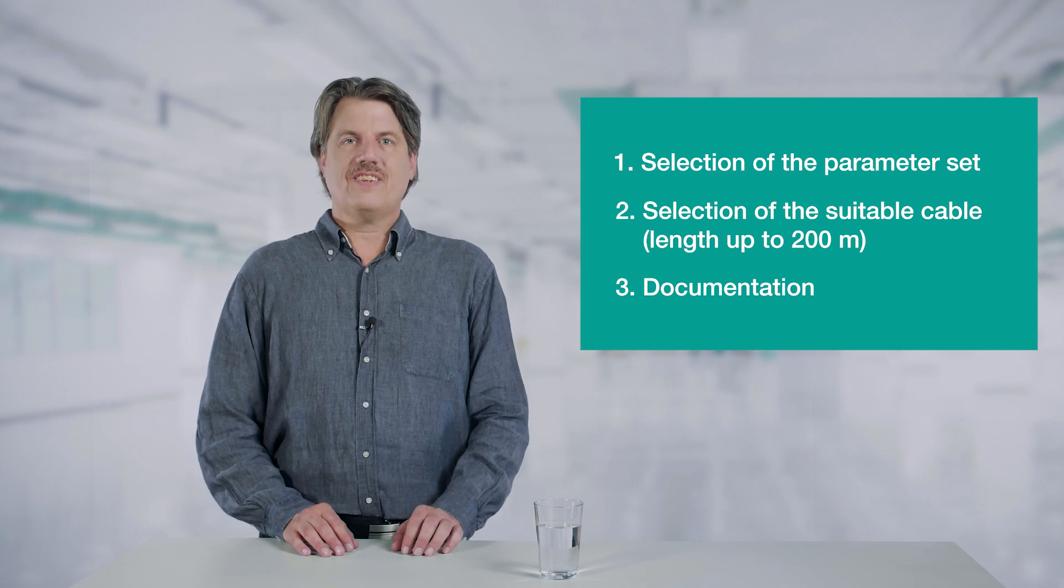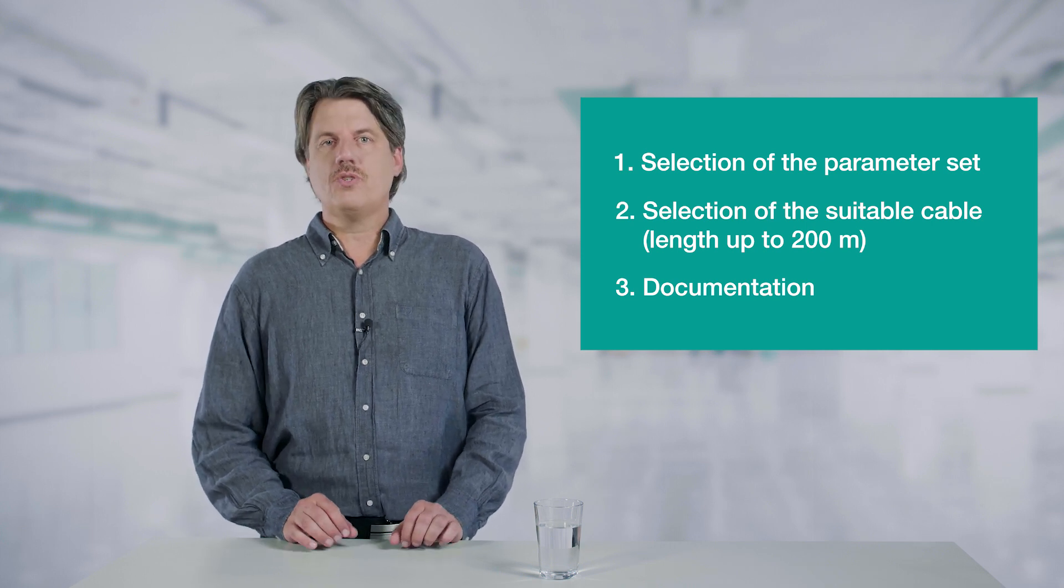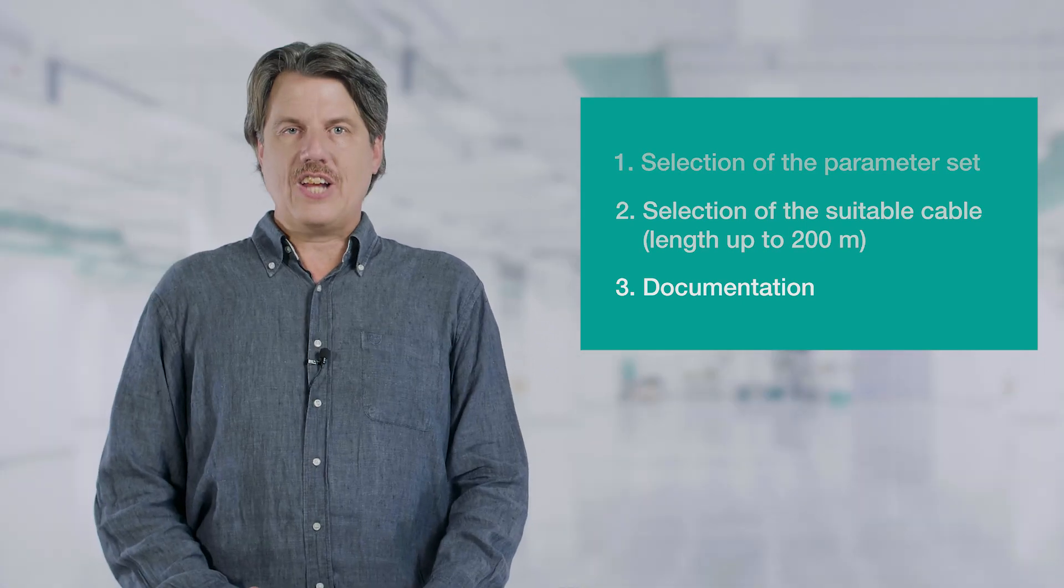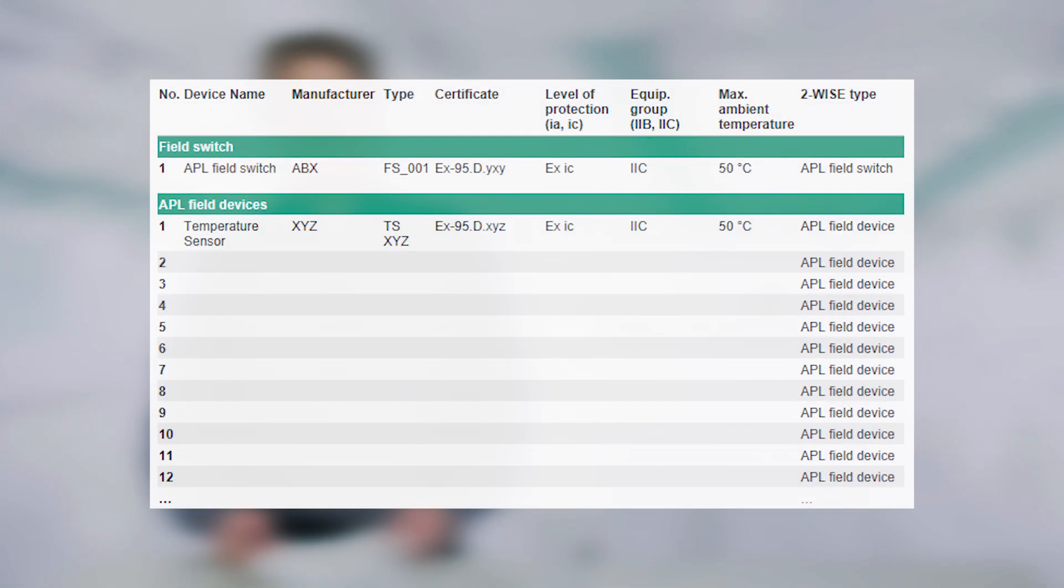Document these technical parameters and the selected components and devices, and then proof of intrinsic safety is provided. The documentation can be easily created in a table, which can then also be created automatically by the engineering system. In this type of table, the device name, the manufacturer, the device type, but also details such as degree of protection or temperature are specified.